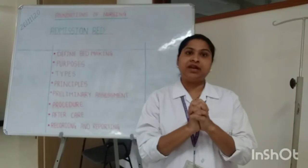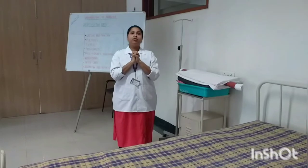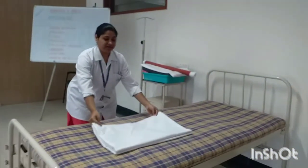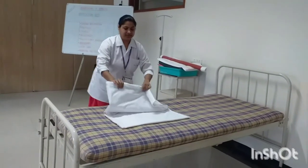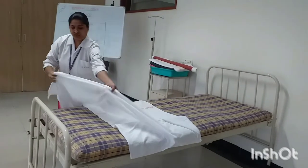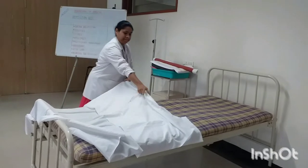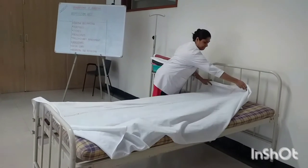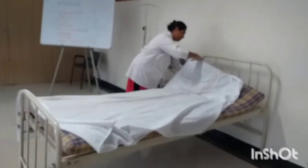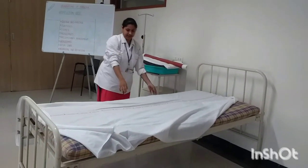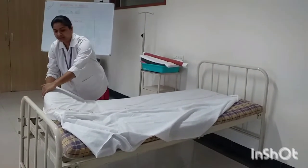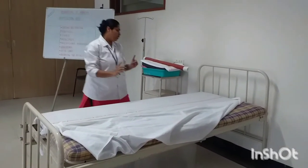Now starting with the procedure: first perform hand washing, then prepare the admission bed. Take the bottom sheet and unfold it onto the bed without touching soiled areas. Secure the bed sheet from one side by lifting the mattress at the head end, then come to the foot end, tightly pull the bed sheet, lift the mattress, and tuck the foot end. Prepare the mitered corner from both sides.